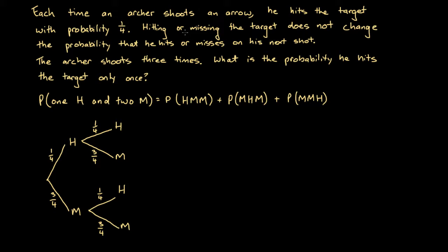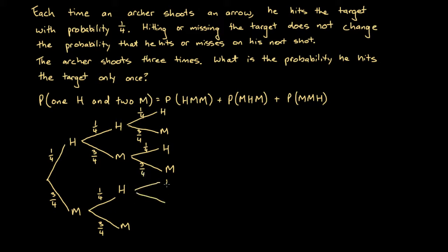We're told that hitting or missing does not change the probability of the next shot. So for the third shot, even if he's hit the first and second shot, the probability that he hits the third shot is still just 1/4, and the probability that he misses is 3/4. We're going to have hit and miss branches — 1/4 and 3/4 — coming out of every one of these outcomes on the tree.